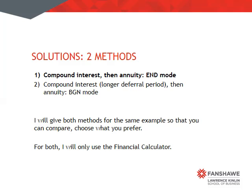There is actually more than one way to get to this answer. I will go through two methods for finding the solution. The first one I'm going to go into more detail with — a compound interest calculation paired with an annuity calculation where the calculator is set in end mode. It is also possible to do this with the calculator set in begin mode, but the deferral period will be a little bit longer. You can choose whatever you prefer.